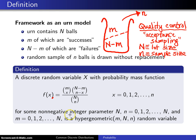That is good for some non-negative integer parameter N, the lot size. Some sample size that runs from 0 to capital N. And some number of successes in the urn running from 0 to N. Then in that case, this is a hypergeometric distribution. And this is our first distribution that has three parameters, little m, capital N, and little n.